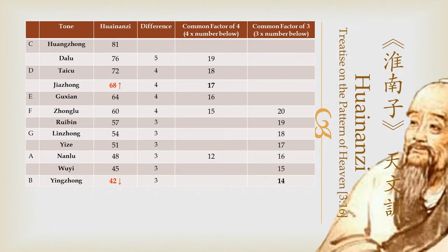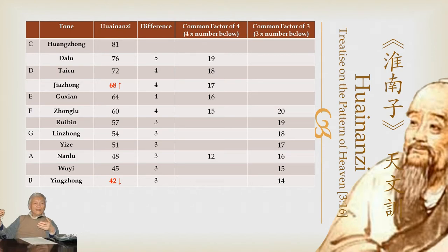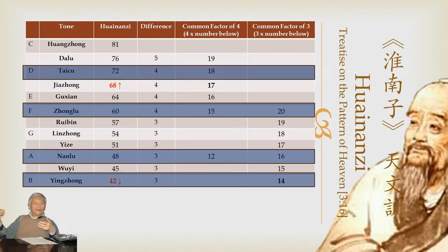Sorry, no 11ths or 13ths. As Professor Zhao Songguang stated in 1979, this presented a totally new realm of possibilities for using intervals that would be otherwise wolf tones and totally inharmonious if they were generated in strict sanfen sunyi, or thirds — things like inversions, diminished sevenths, augmented sixth chords, or just playing them in close succession so that they sound off of one another.